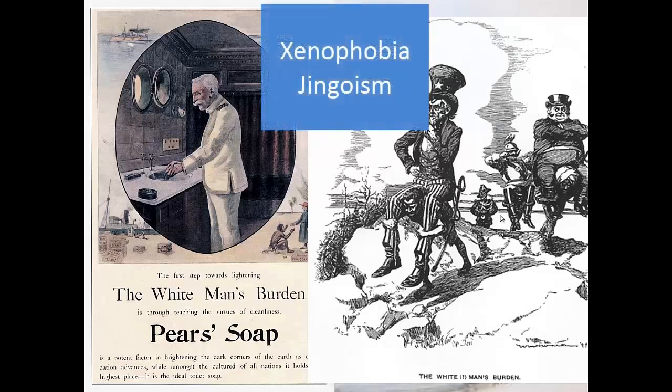Two terms I really want you to go away with a functional understanding of are xenophobia and jingoism. Xenophobia being this fear of foreigners — and that's a lot of what drove the anti-imperialists' arguments, the fear of bringing in new people into the United States. Jingoism is more this white man's burden idea — that your history, your culture, your government is better or far superior than any other out there.